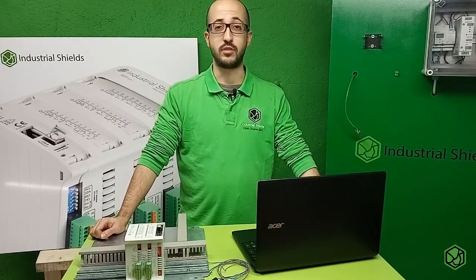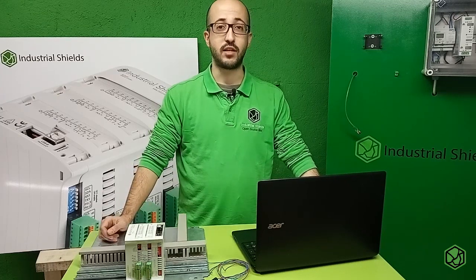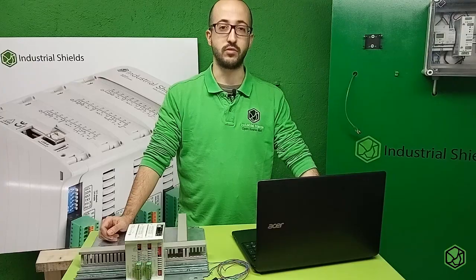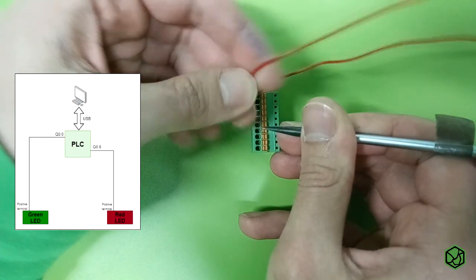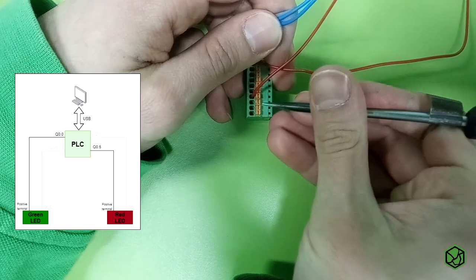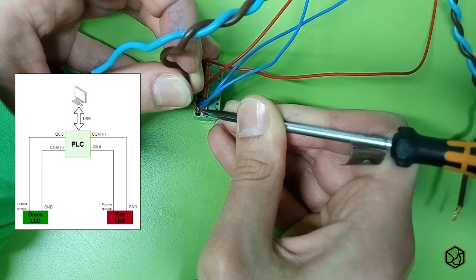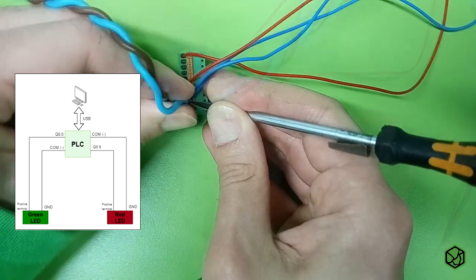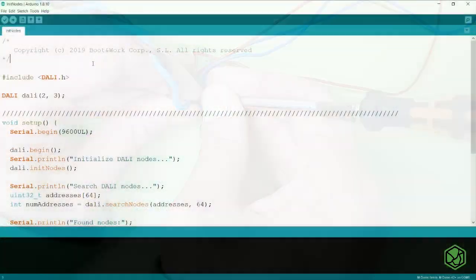It's time to do a small example with digital outputs. We will activate two LEDs and each second we will change their values. We will connect the LED to the Q00 output and the red one to the Q06 output. The ground will be connected to the isolated ground of the PLC. Remember, we must connect a voltage to the inputs. So, we will connect a 12V power supply in order to get 12V from the outputs.